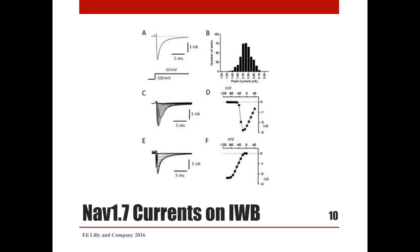This is a look at NAV1.7 currents recorded on IonWorks Barracuda in population patch mode. A depolarizing step evokes a current that rapidly activates and inactivates, as shown in panel A. The distribution of currents was relatively narrow, shown in panel B. The average amplitude was around 2.5 nanoamps. Panels C and D show activation with a threshold at minus 50 mV and peak around minus 20 mV. Panels E and F show inactivation with a half-inactivation voltage of minus 50 mV. Overall, NAV1.7 properties on Barracuda looked comparable to manual patch recordings.